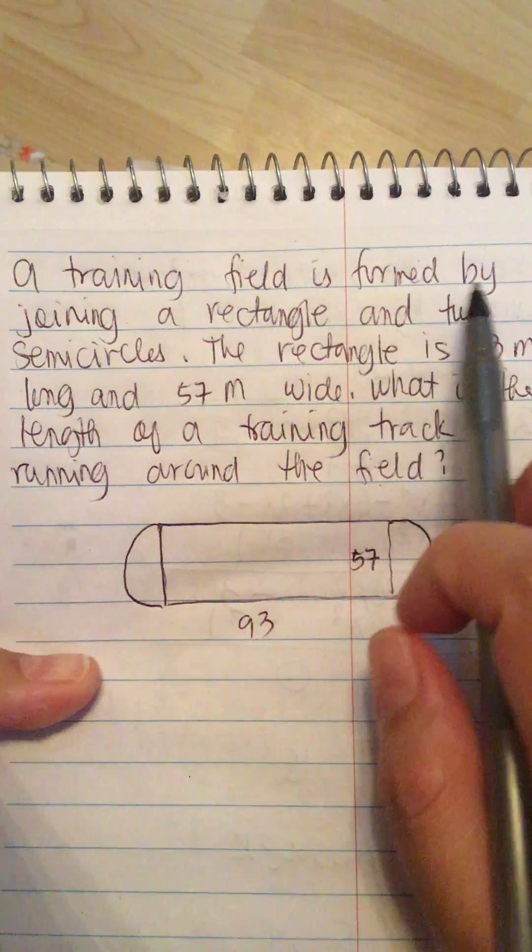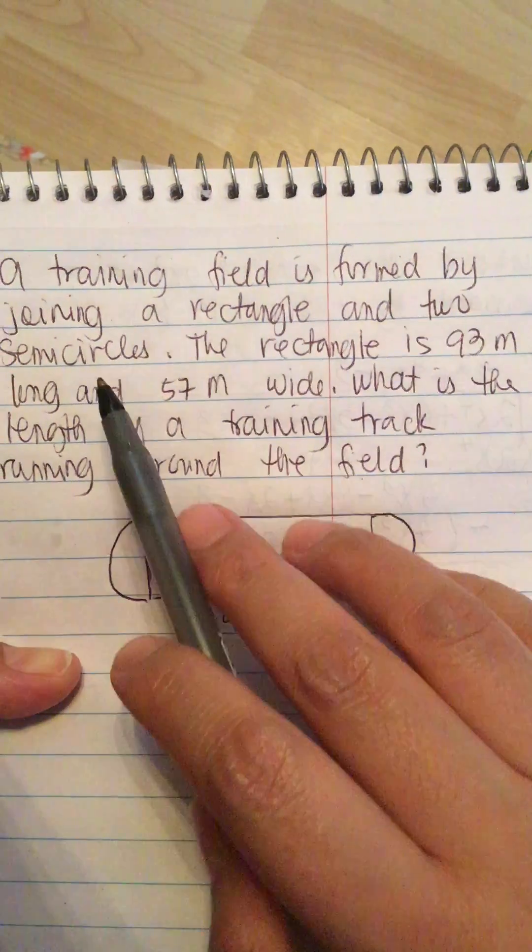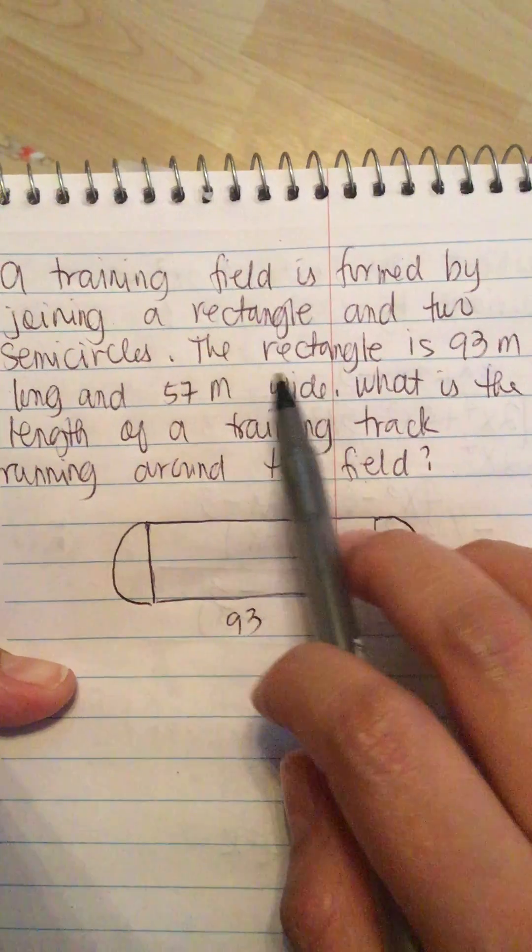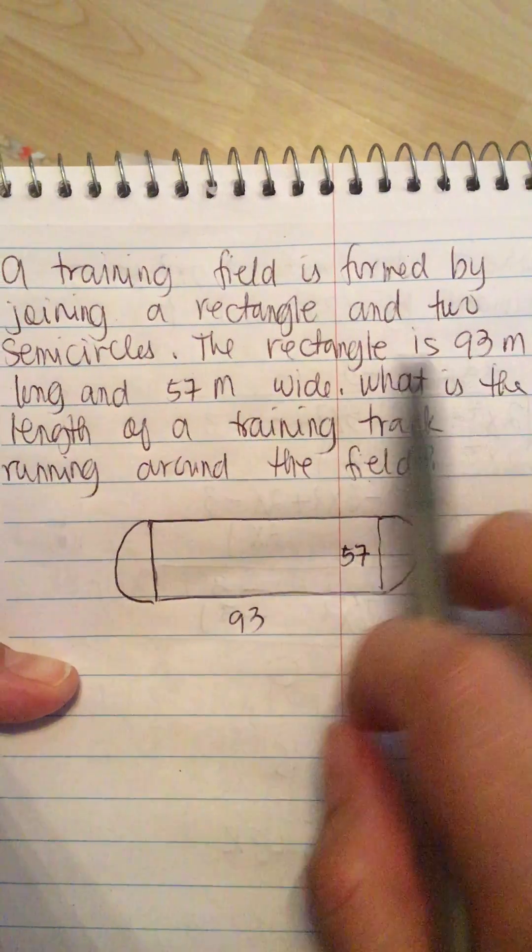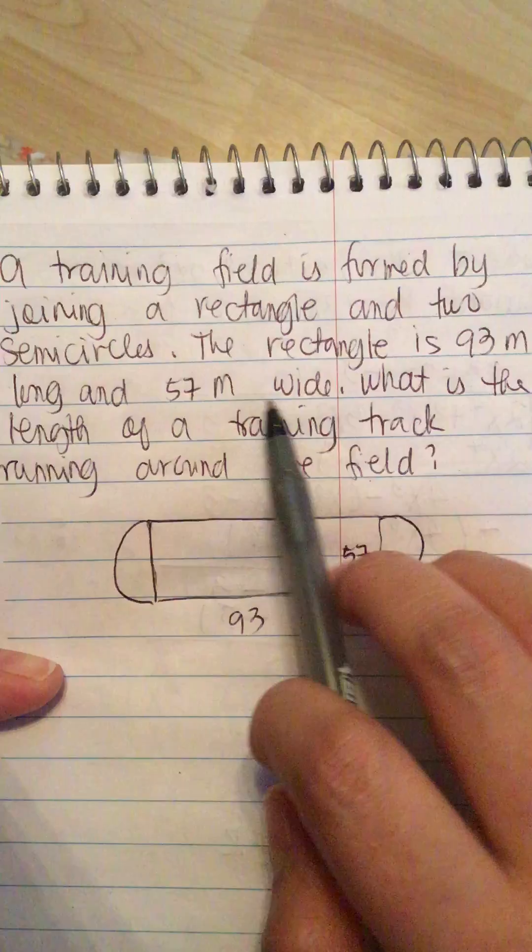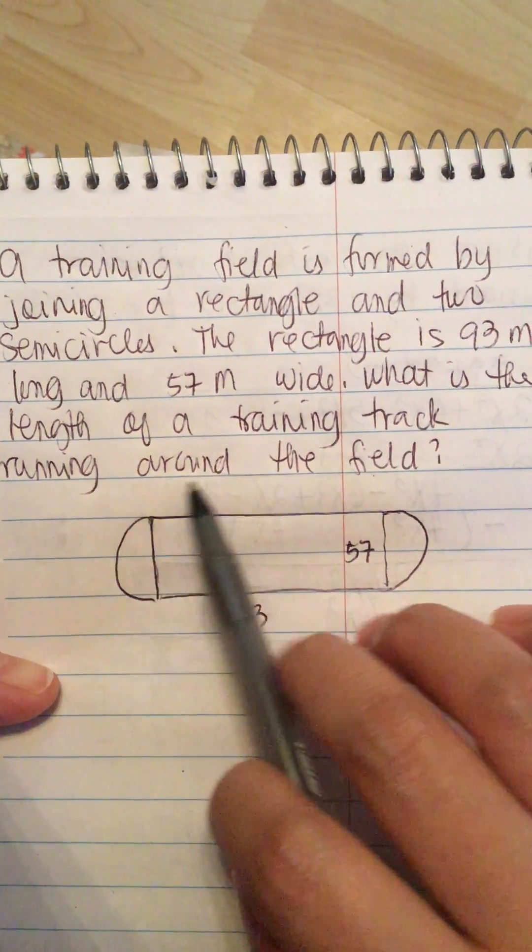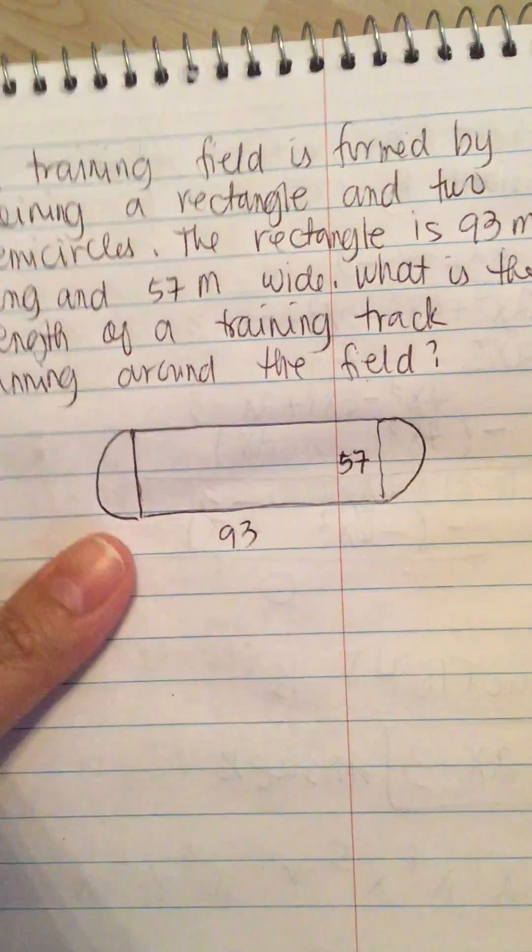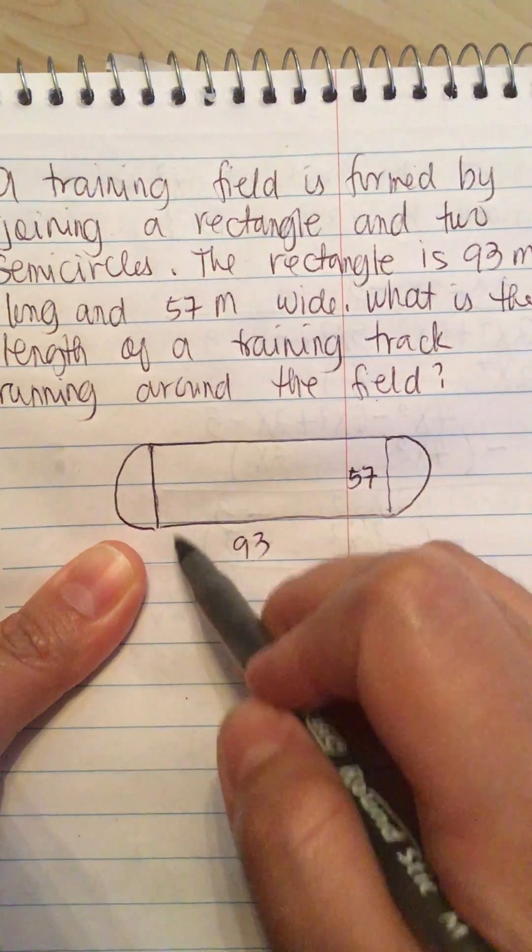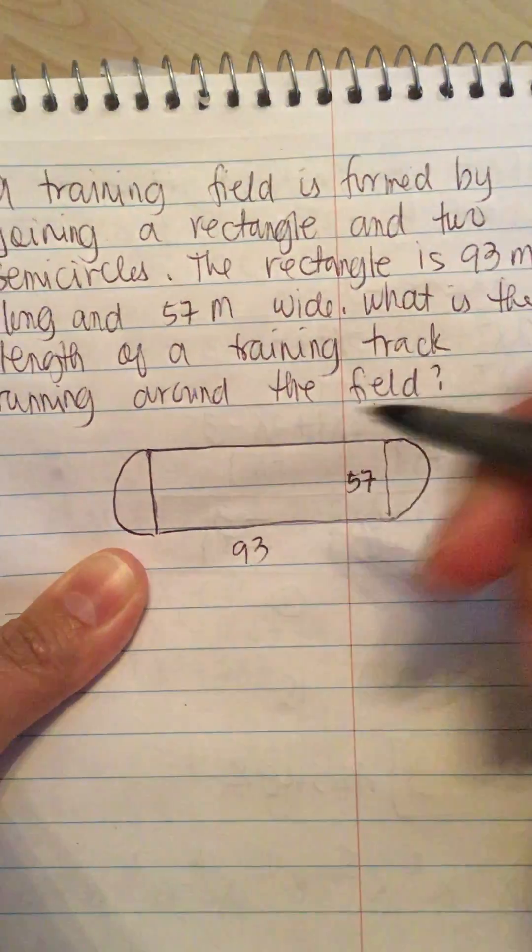A training field is formed by joining a rectangle and two semicircles. The rectangle is 93 meters long and 57 meters wide. What is the length of a training track running around the field? So this is 93, that...